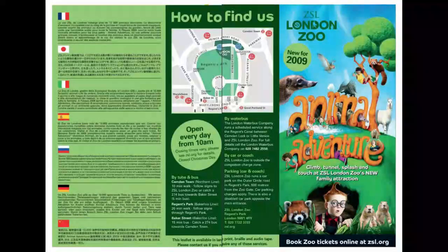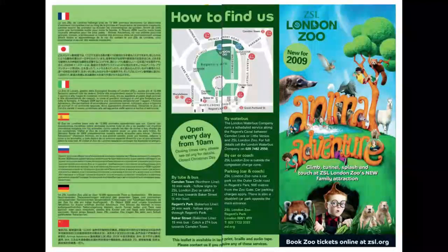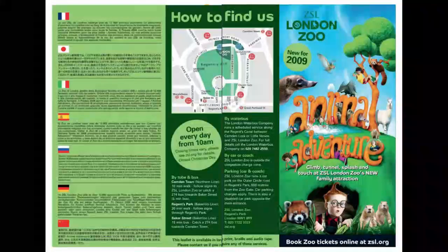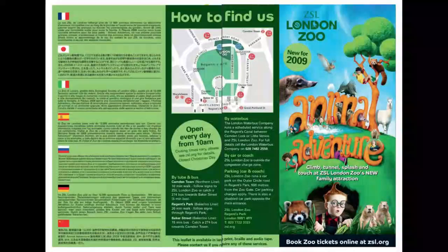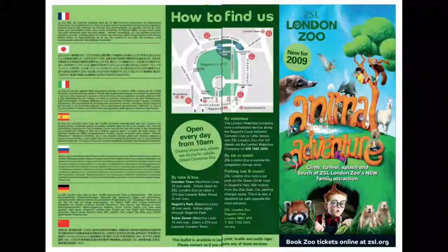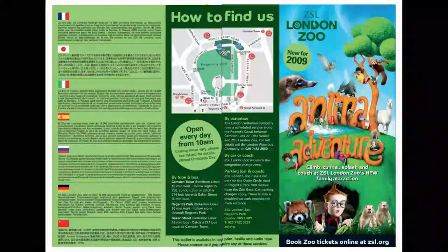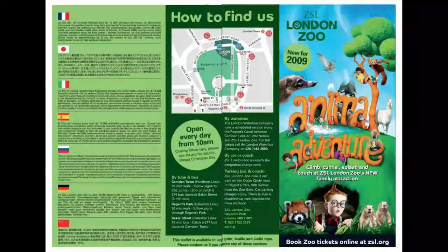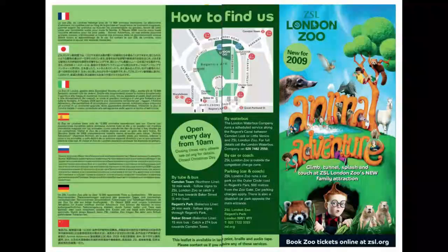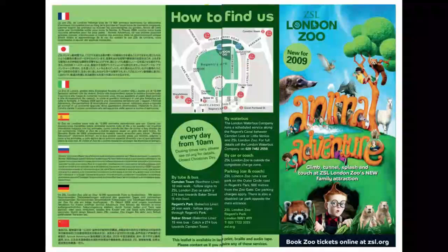Obviously it's important to have certain things on it, such as how to get there. So in this case there's a map. Because it's in London, they've got details of how to get there by tube and bus, how to get there by coach or car, and how to even get there by water bus. It also very clearly displays the opening times. The only day it's closed is Christmas Day, so it's open all year round.